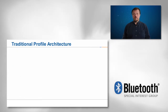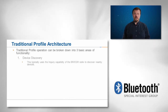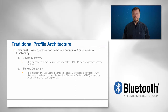Traditional profile operation can be broken down into three basic areas of functionality. First is device discovery, which is performed using the inquiry capability of the BREDR radio to discover nearby devices. Second is service discovery, which typically involves creating a connection to a discovered device and then using the service discovery protocol or SDP to determine the services the remote device supports.